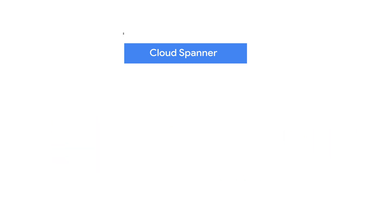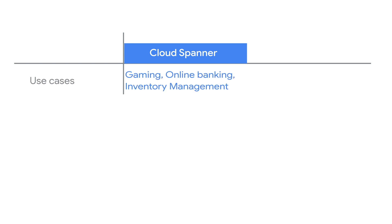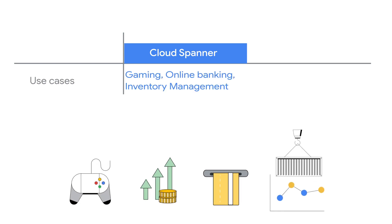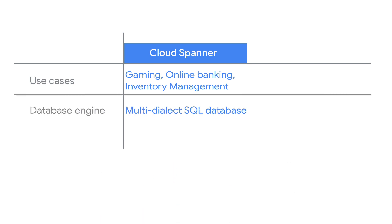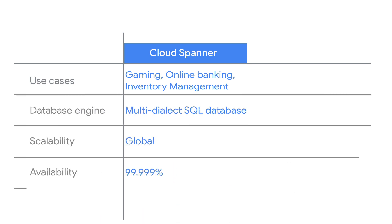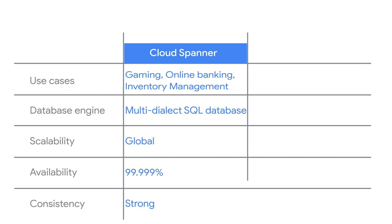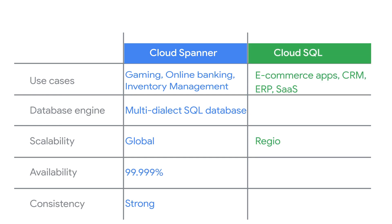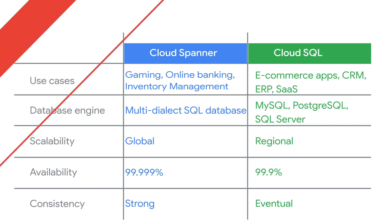Spanner is best suited for apps such as gaming, retail banking, payment solutions — any large-scale global applications where you require unlimited scalability and strong consistency. Cloud SQL is more suited for smaller-scale database requirements such as general-purpose web frameworks, e-commerce apps, and so on.